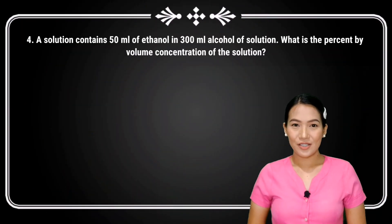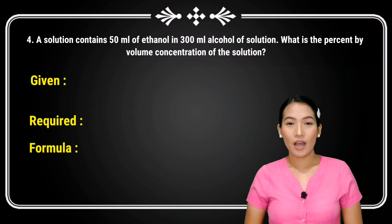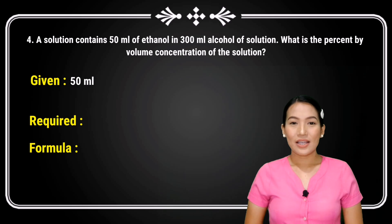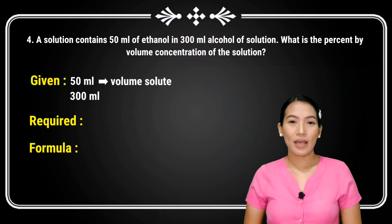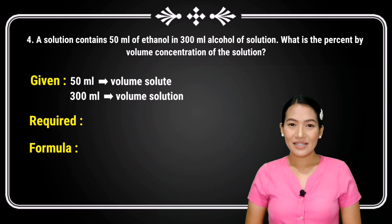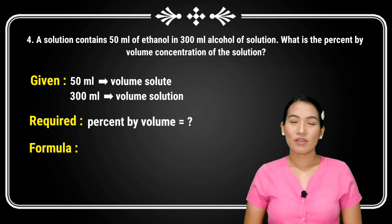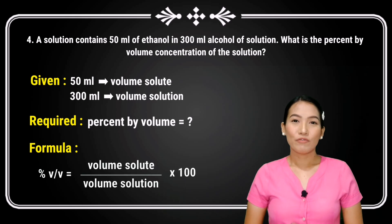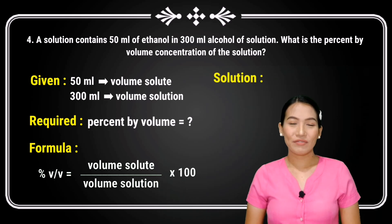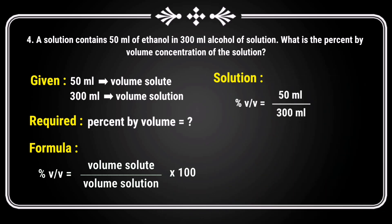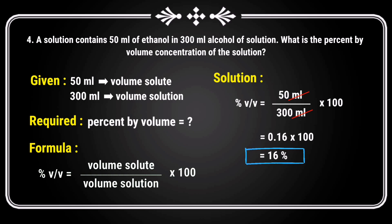Again, let us identify first what are given, what is being asked, and what formula we are going to use. Here, 50 ml is the volume solute while 300 ml is the volume of solution. What is asked is the percent by volume. Therefore, we will use the formula: percent by volume equals volume solute over volume solution times 100. Now, we will substitute all the values: percent by volume equals 50 ml divided by 300 ml times 100. Cancel the units so we have 0.16. But we still have to multiply 0.16 to 100. Therefore, the answer is 16% of ethanol.